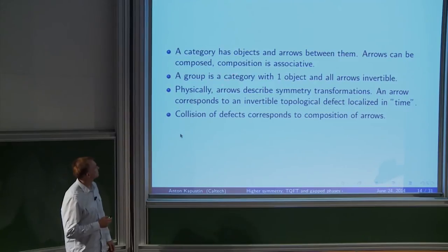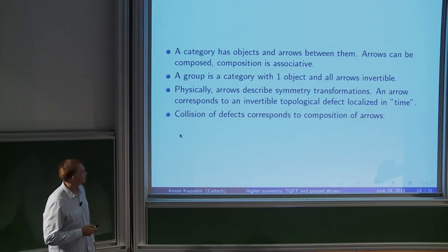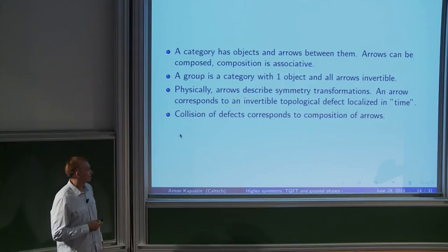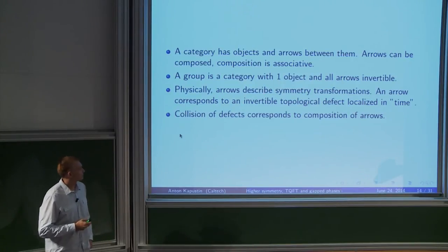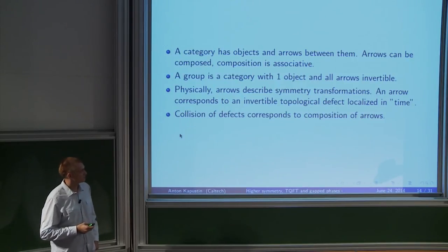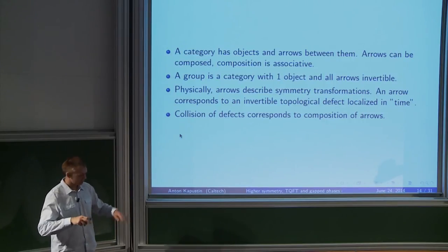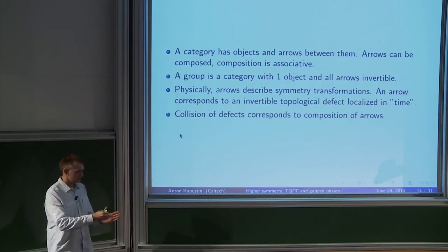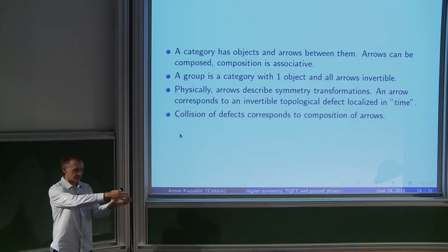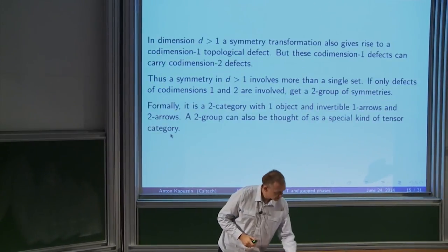I'm going to have one-forms and two-form gauge fields, with gauge transformations living on both zero-simplices and one-simplices. What sort of structure do they form? Before I had a gauge group, and now I will need something called a gauge two-group. The natural approach is category theory. You can think of a group as a category with one object where all arrows are invertible. Physically, arrows describe symmetry transformations — an arrow corresponds to an invertible codimension-one topological defect localized in time, and composition of arrows is the collision of these defects.